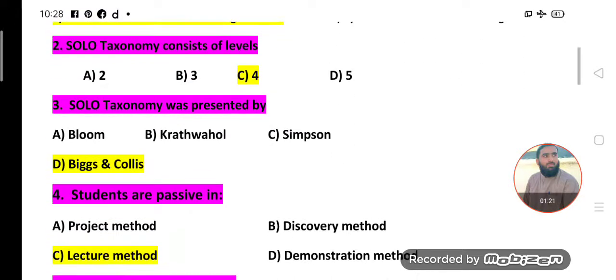MCQs number two. S.O.L.O. taxonomy consists of levels. How many levels are there? Four levels are there. So this taxonomy consists of four levels.